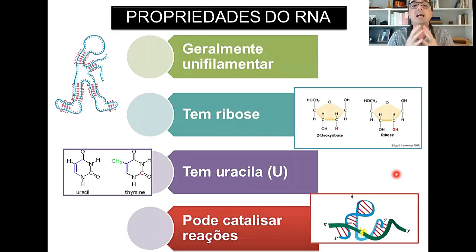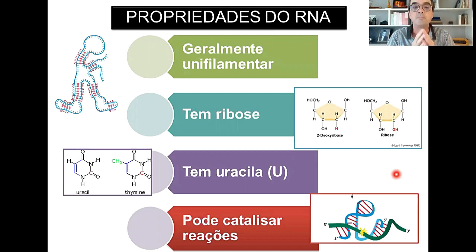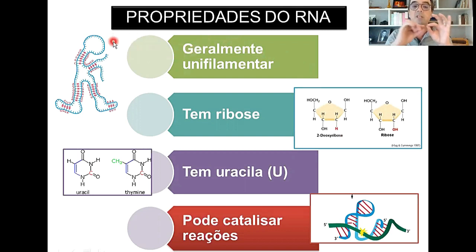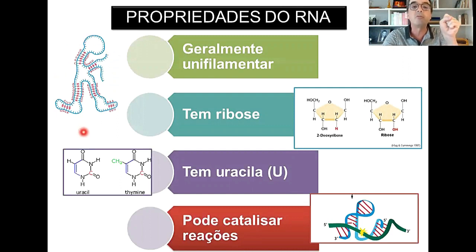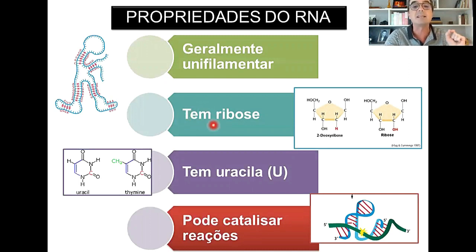Vamos falar um pouquinho dessa grande classe de moléculas que são os RNAs. Além dos RNAs mais famosos que aparecem em todos os livros de biologia, existem muitos outros. Hoje existem muitas famílias de RNA com as seguintes características em comum: normalmente são unifilamentares, ou seja, em vez de ser uma dupla fita de nucleotídeos, é uma fita única, o que dá maior flexibilidade a ponto de essa fita poder se dobrar sobre si mesma, formando estruturas onde trechos podem formar estruturas pareadas.